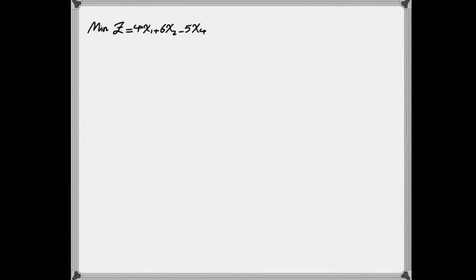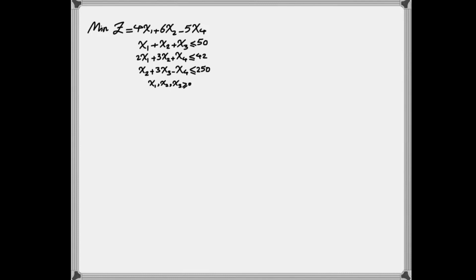Suppose that we have a linear programming problem as shown on the screen. You have the objective function that is a minimization, and you have three constraints for this problem. Now, let's start by standardizing this problem.